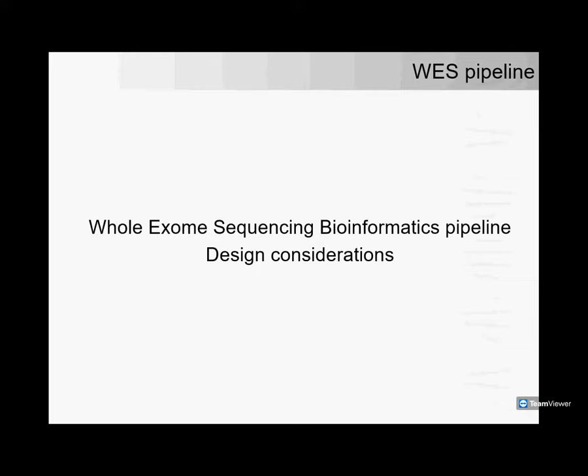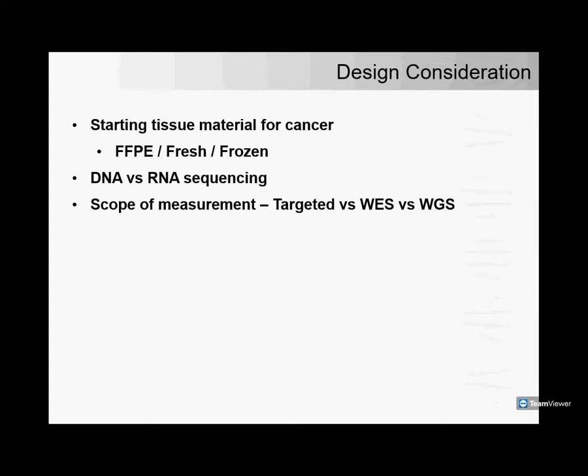We now come to the design considerations for a whole exome sequencing bioinformatics pipeline. Given this brief understanding of the scope of measurements and how data is measured using semiconductor or optical-based approaches, what should the design considerations be? This is universal for any kind of data analysis pipeline for sequencing data. The first thing is: what is my starting material? The most common type of sample available for cancer testing is formalin-fixed paraffin-embedded (FFPE) tissue — universally done in surgical pathology and the most common, relatively cost-effective material.